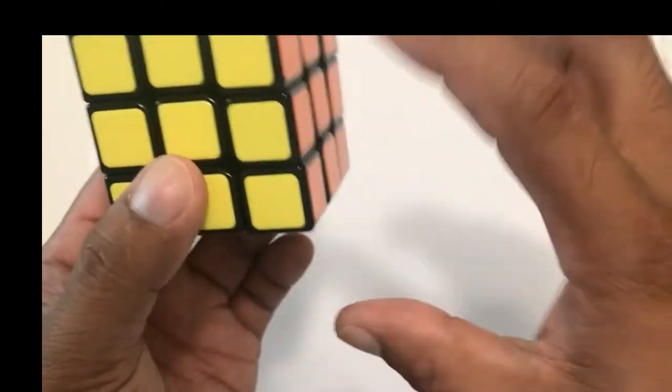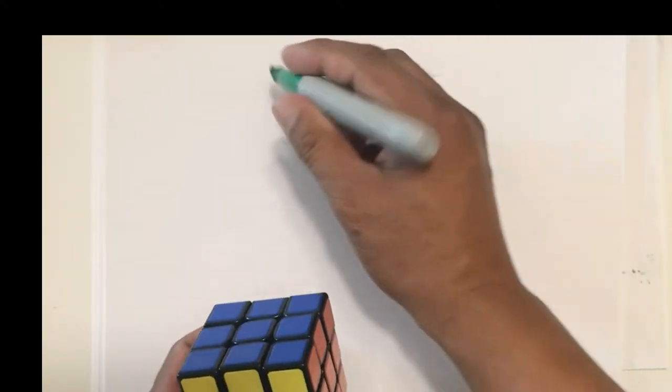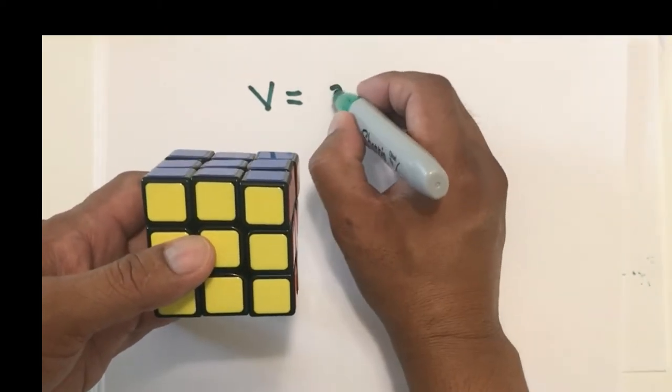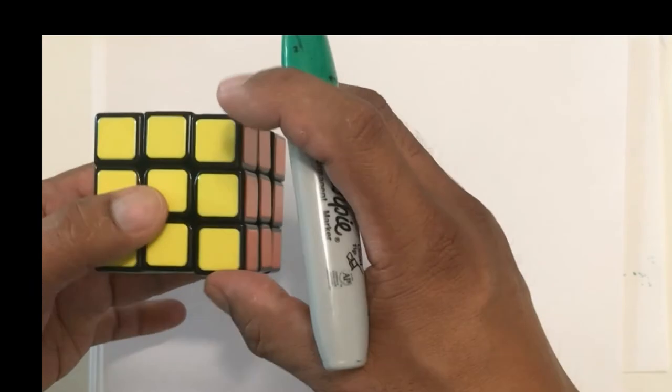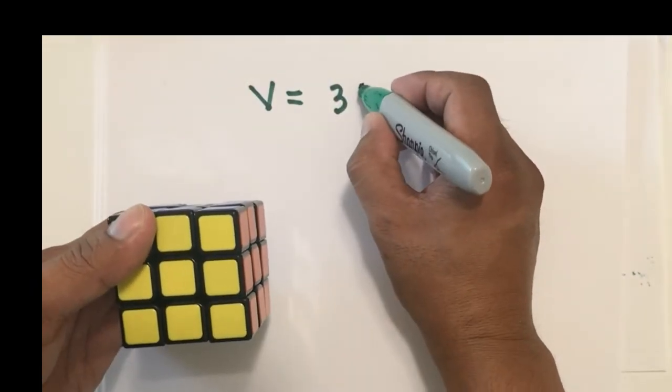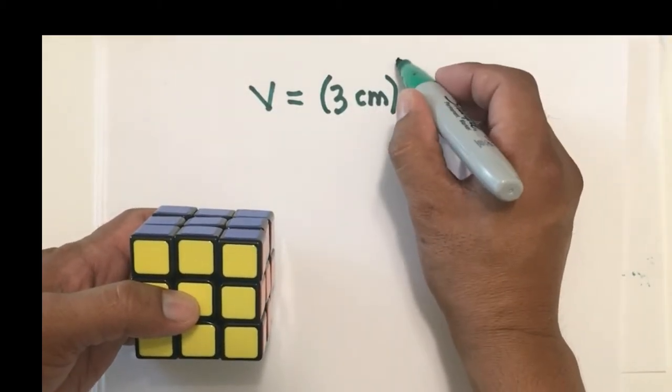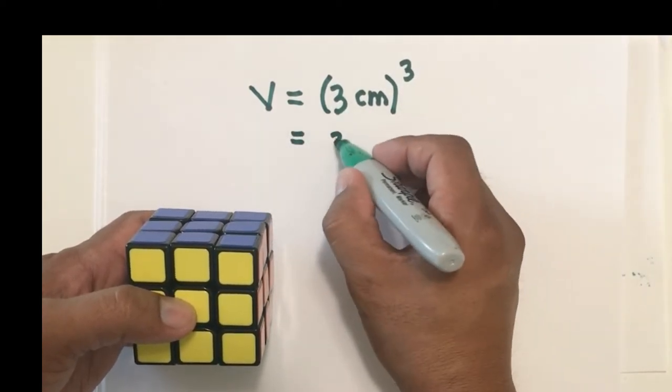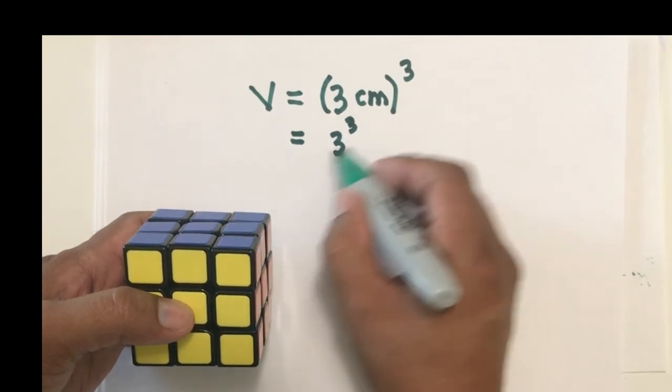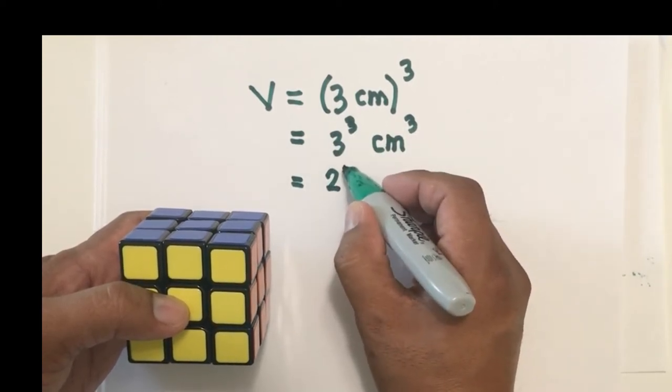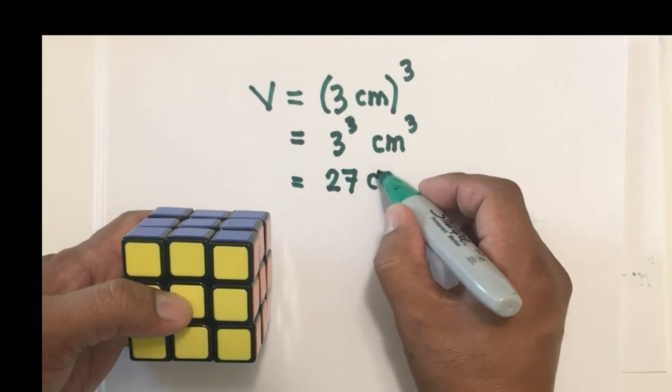Now, suppose we have these other cubes. Let's say we have a 3 by 3 Rubik's cube. What is the volume of this? So you just identify what is the side length. So the volume of this 3 by 3 Rubik's cube would be the side length of 3 units. And let's assume that this is a centimeter. So the side length is 3 centimeters raised to the third power. So we get 3 to the third and centimeter to the third. 3 to the third is 3 times 3, 9 times 3, 27, and centimeters cubed.